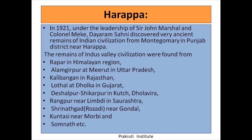The next point is Harappa. In 1921, under the leadership of Sir John Marshall, Colonel Mackay, and Dayaram Sahani discovered very ancient remains of Indian civilization from the Montgomery district of Punjab near Harappa. Remains of the Indus Valley civilization were found at many sites: Ropar in the Himalayan region, Alamgirpur at Meerut in Uttar Pradesh, Kalibangan in Rajasthan, Lothal at Dholka in Gujarat, Deshalpur, Shikarpur in Kutch, Dholavira, Rangpur near Nimdi in Saurashtra, Srinathgad, Rosedi near Gondal, Kunshir near Morbi, and Somnath.